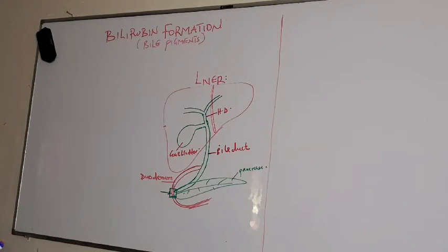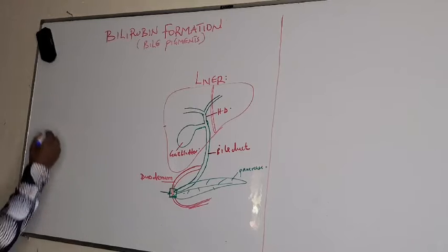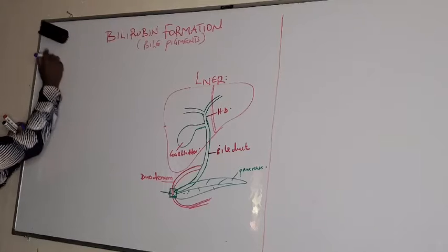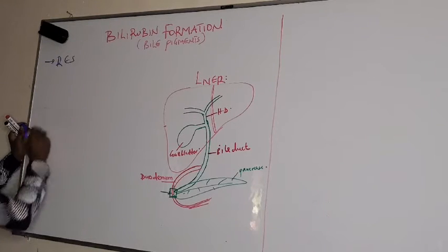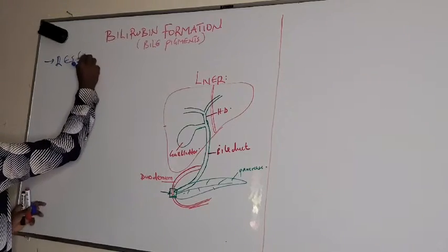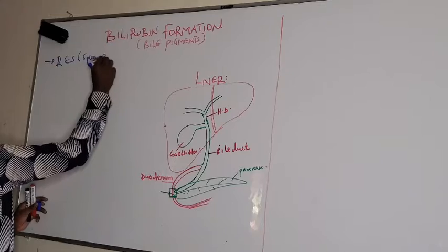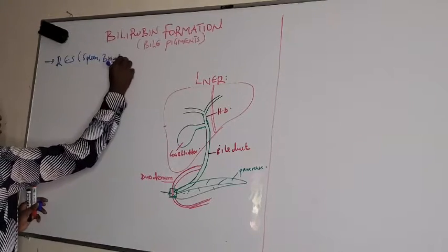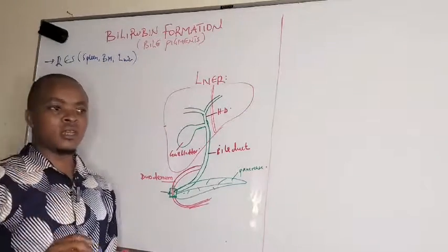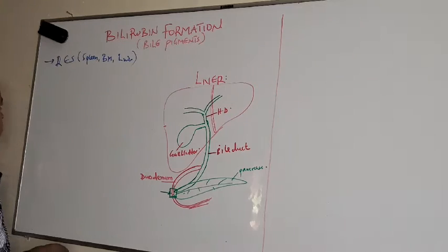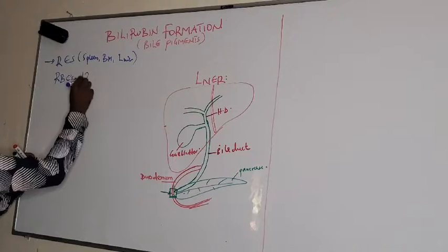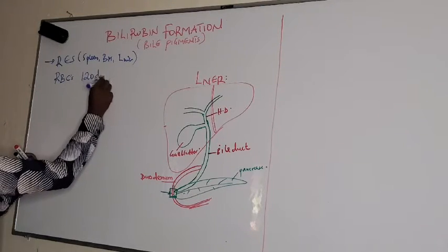Bilirubin formation occurs in the reticuloendothelial system — that is the spleen, bone marrow, and liver. Within this reticuloendothelial system, these red cells are phagocytosed. After 120 days, they are destroyed.